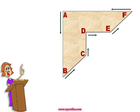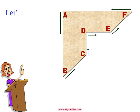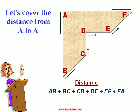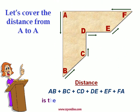Let us cover the distance from A to A in the direction shown. The total distance would be AB plus BC plus CD plus DE plus EF plus FA. According to the definition of perimeter, the total distance will be equal to the perimeter of the figure.